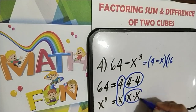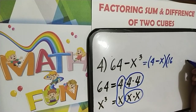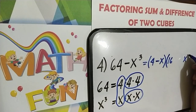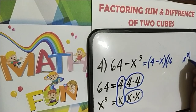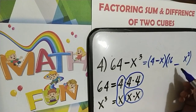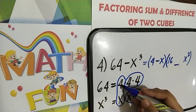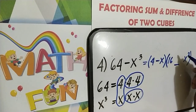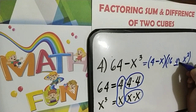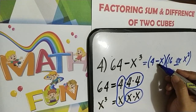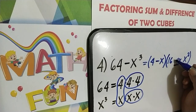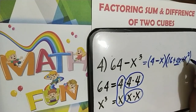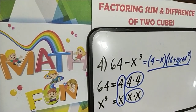And for the third pair, x times x, that is x squared. For the middle term, using the first pair: 4 times x, that is 4x. And since this is minus, the operations of the second factor should be both plus. And here it's just easy. Let's proceed now to example number 5.